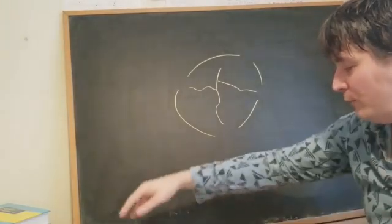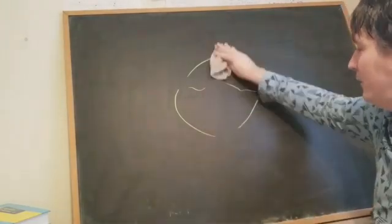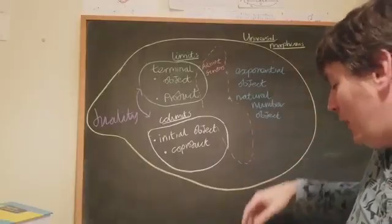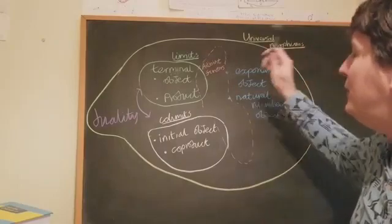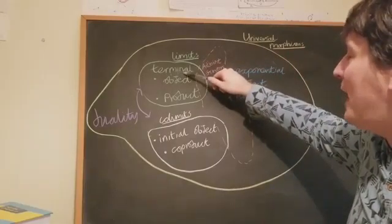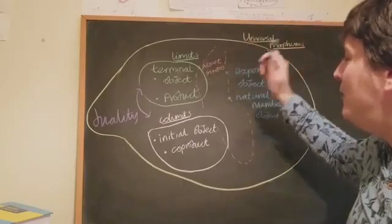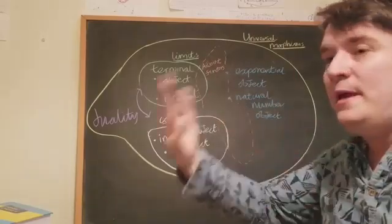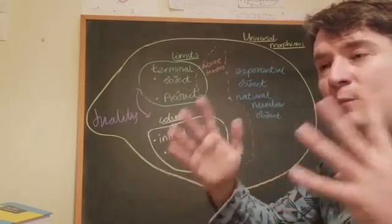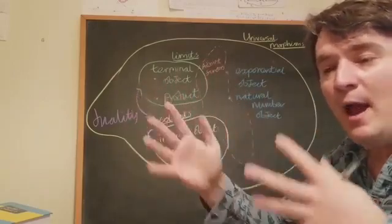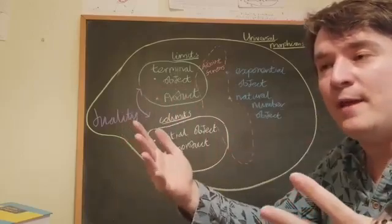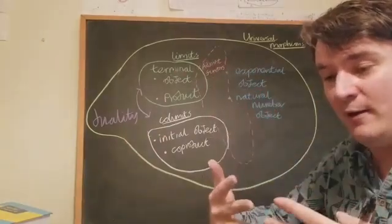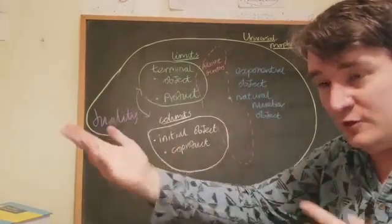So let's just recap a few of the things that we've done already and how they're related to each other. So we started out, one of the first things that we defined was the idea of a terminal object. And then we thought about this notion of a product. Now as we define these notions in category theory, we see them applied in different categories. And that's obviously one important aspect of this is to take these definitions from category theory and we understand that we can apply them to lots of different categories.